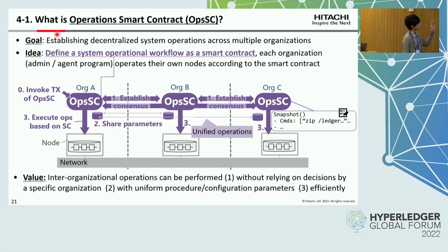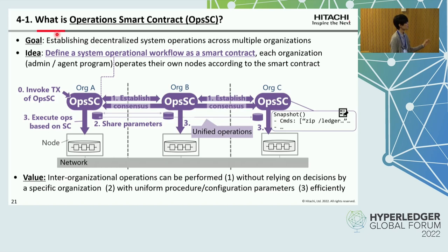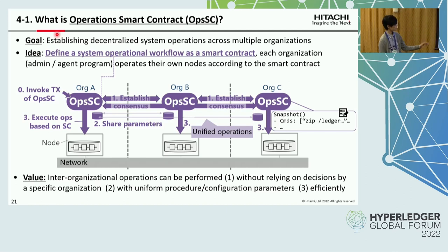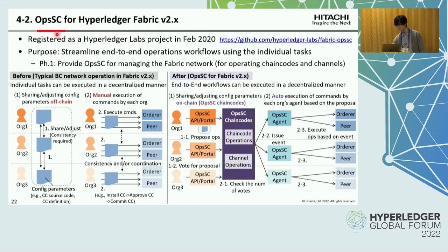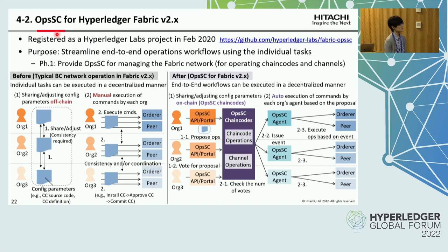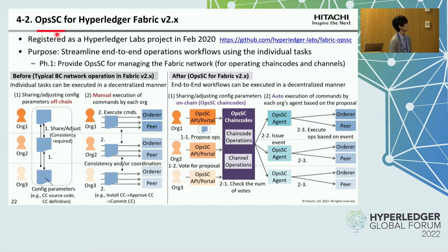The value of OPSSC is that inter-organizational operations can be performed without relying on decisions by a specific organization, with a uniform procedure and config parameters, efficiently. We have implemented OPSSC for Hyperledger Fabric version 2.x. The implementation is registered as a Hyperledger Labs project in 2020. The purpose is to streamline end-to-end operations workflow using individual tasks like fabric CLI subcommands.